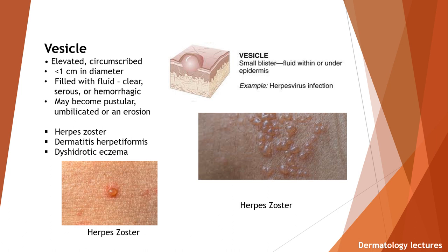Vesicle. It is an elevated, circumscribed lesion less than one centimeter in diameter, filled with fluid — clear, serous, or hemorrhagic. May become pustular, umbilicated, or an erosion. Examples are herpes zoster, dermatitis herpetiformis, and dyshidrotic eczema.